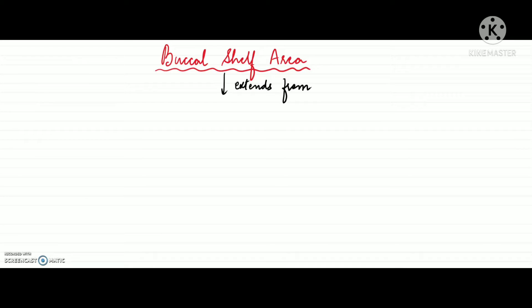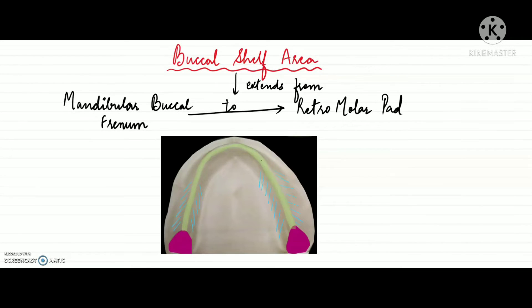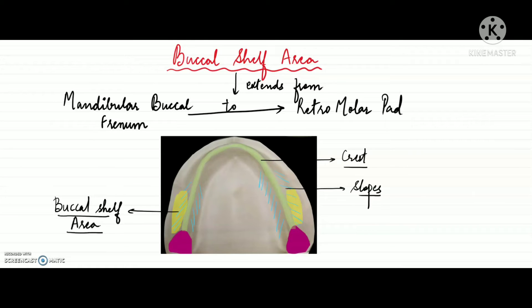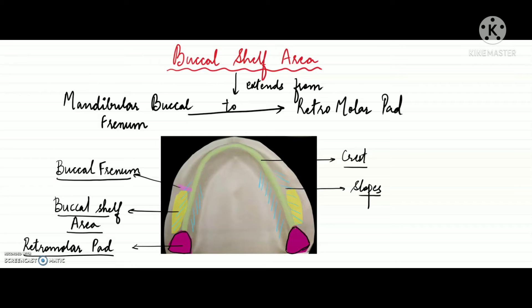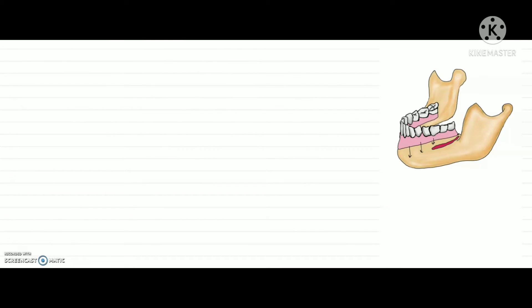The next supporting structure is the buccal shelf area, which extends from the mandibular buccal frenum to the retromolar pad area, or the anterior edge of the masseter muscle. In the diagram, the yellow highlighted portion represents the buccal shelf area. It is bounded anteriorly by the buccal frenum, posteriorly by the retromolar pad area, medially by the crest of the ridge, and laterally by the external oblique ridge.